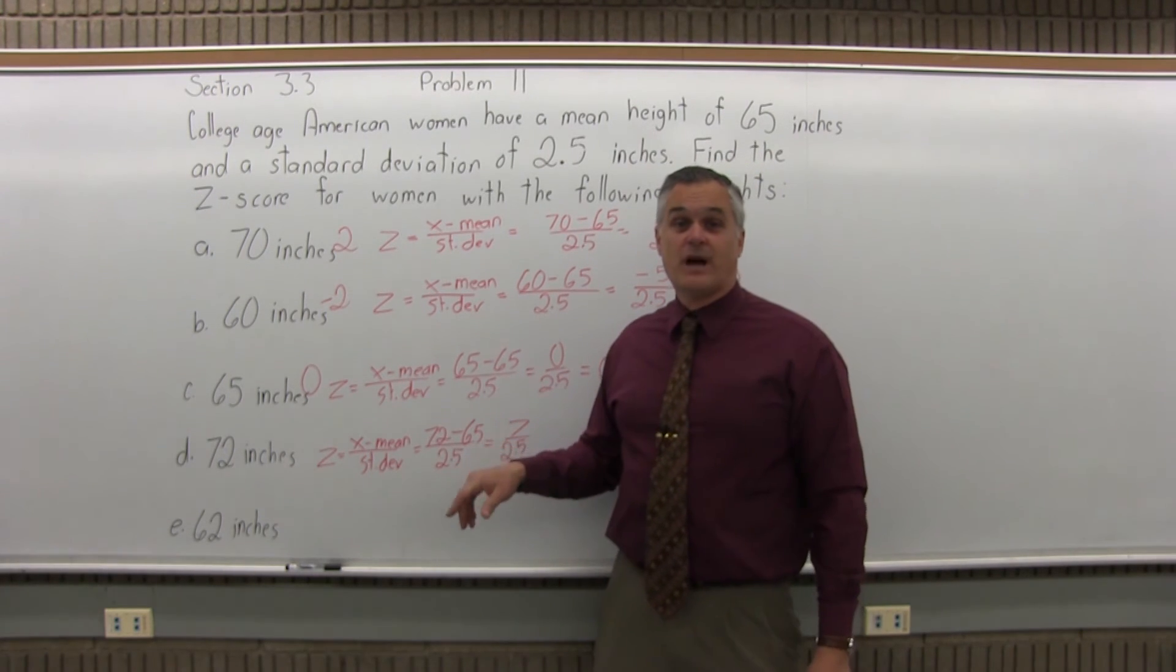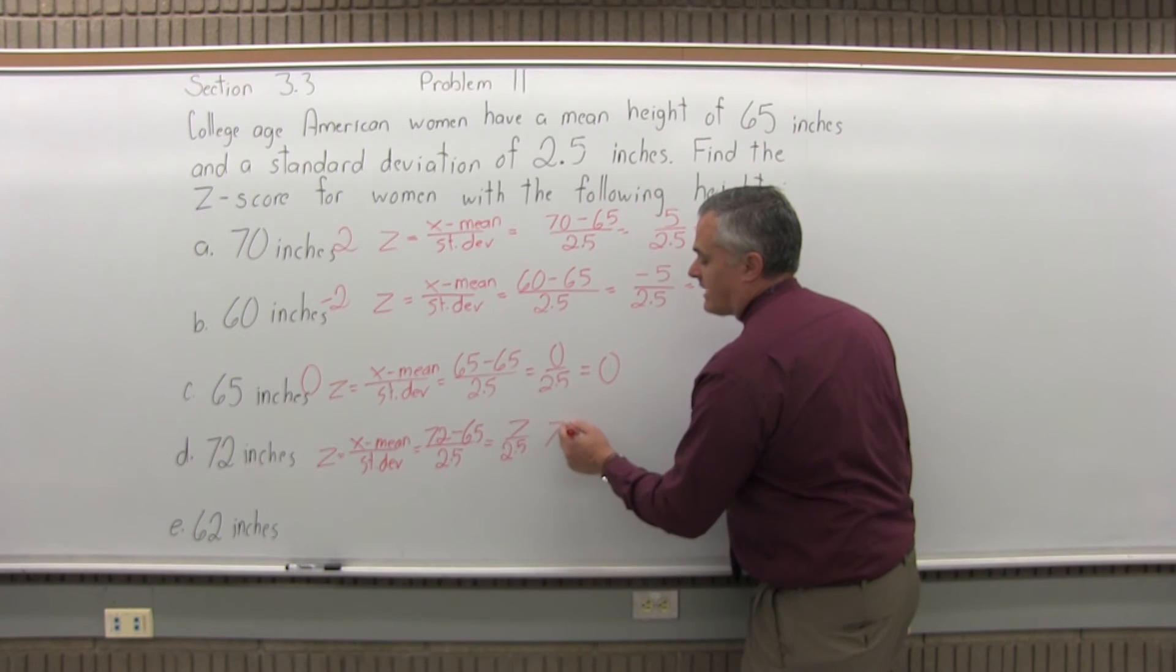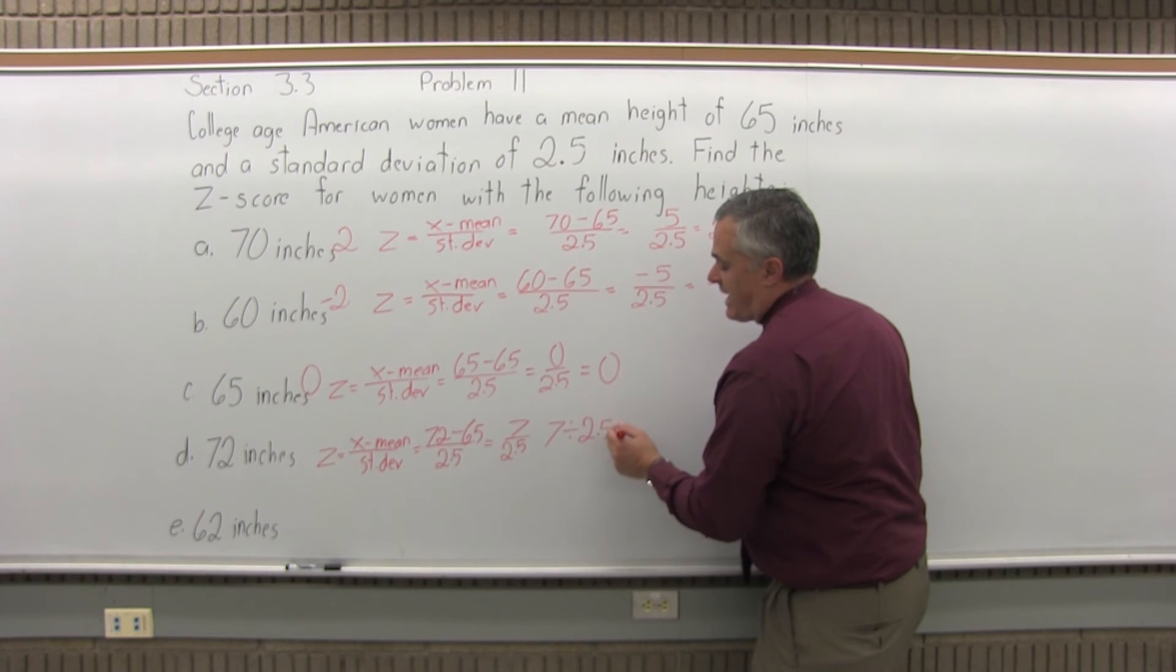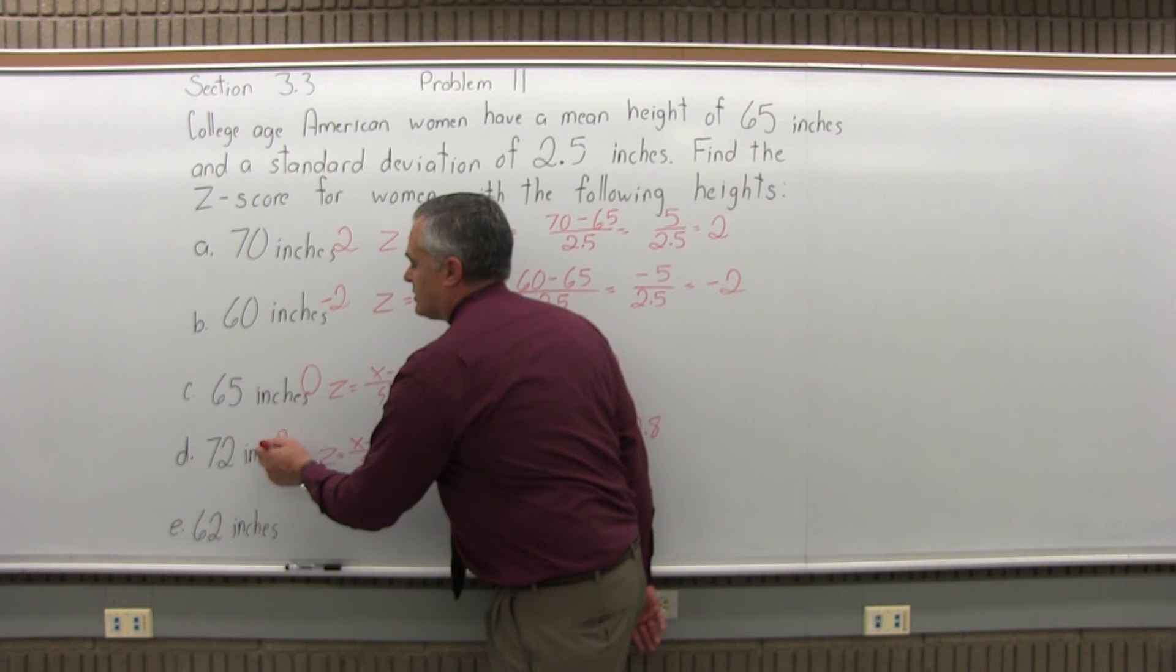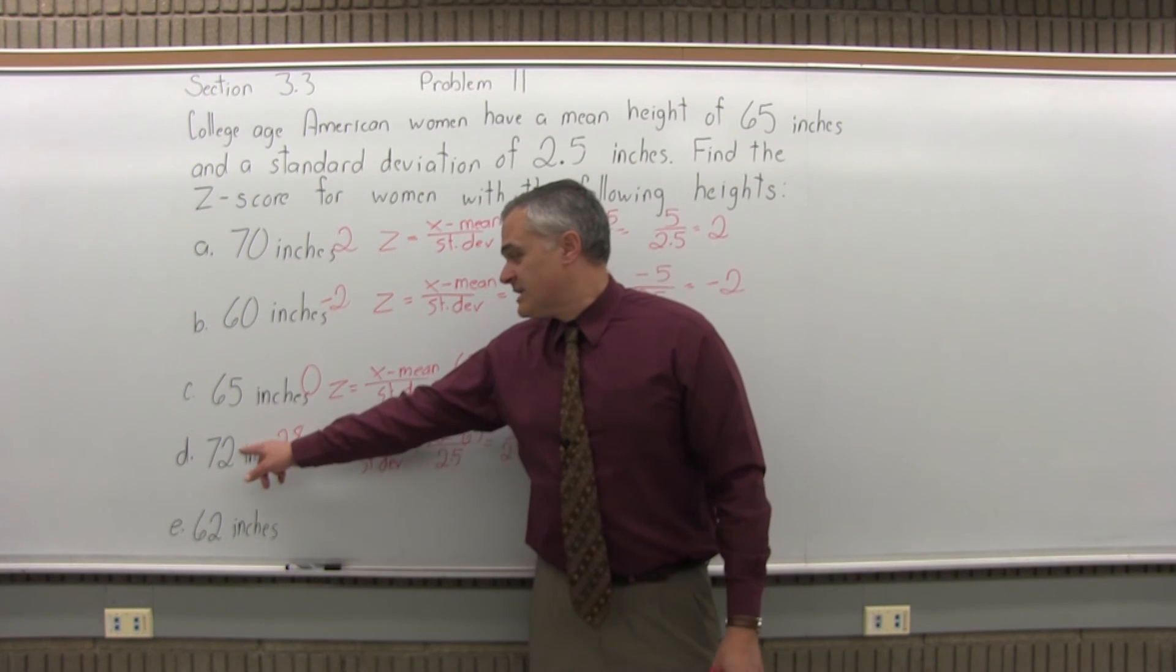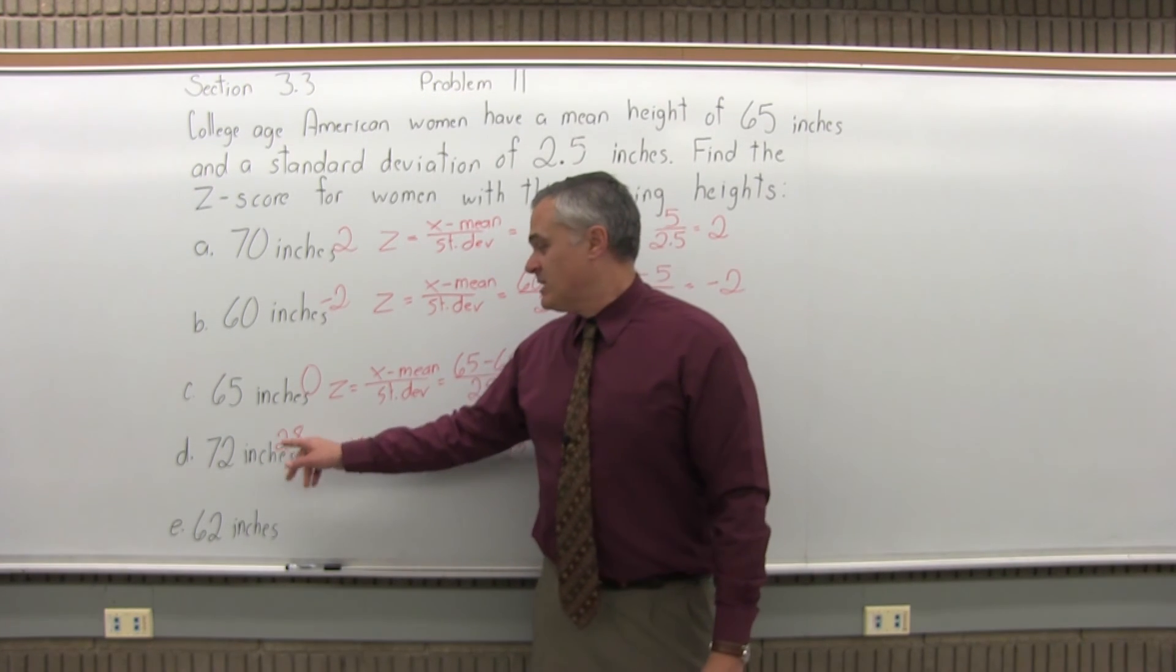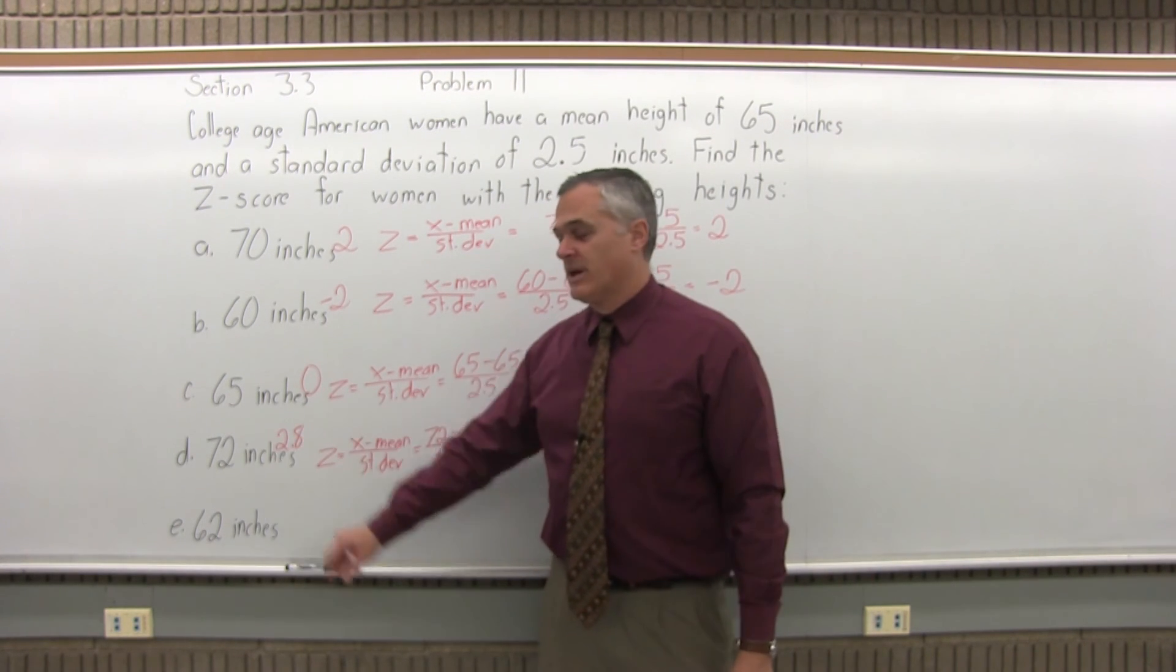Now, that one doesn't reduce quite as nice as the previous one. 7.5 over 2.5 would reduce to 3. But this is something you might want to take out a calculator for and just do 7 divided by 2.5 and the calculator will tell you that it's 2.8. The z-score is not necessarily a whole number answer. It's more often a fraction or a decimal. So a woman who is 72 inches tall will have a z-score of 2.8 for her height. That means she is 2.8 standard deviations taller than average because of a positive 2.8.